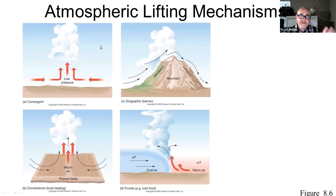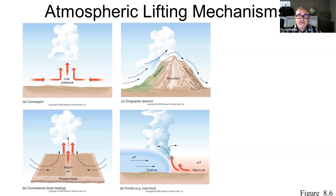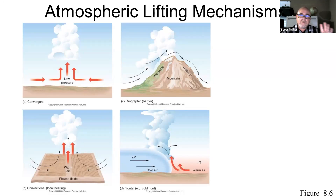These are called atmospheric lifting mechanisms — different ways that air is moved upward. What I want you to take note of is what all four diagrams have in common: all four show air being pushed upward. As it's pushed upward, it cools adiabatically. As it cools adiabatically, the relative humidity goes up, the air becomes saturated, and condensation occurs. There are four principal means of doing this, and we call them atmospheric lifting mechanisms.